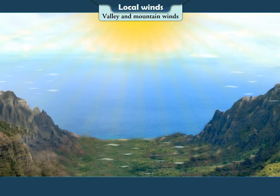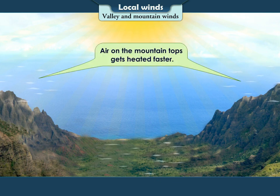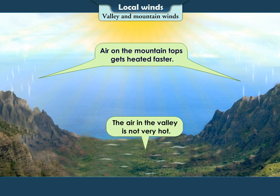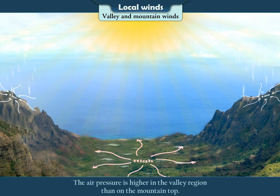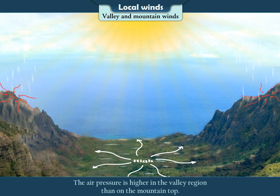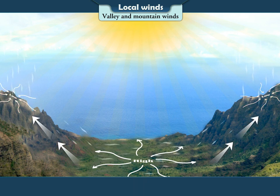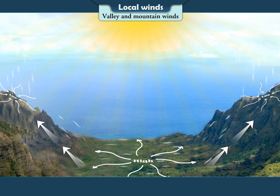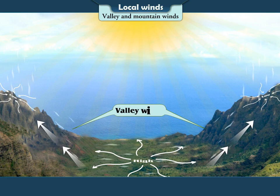Valley and Mountain Winds. During the day, air on the mountaintops gets heated faster. As a result, it becomes lighter and moves upwards. The air in the valley is not very hot, so the air pressure is higher in the valley region than on the mountaintop. Hence, wind movements start from the valley to the mountaintop. These winds are called valley winds.